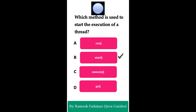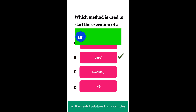The correct answer is the start() method. The start() method is used to start the execution of a thread. When you call start(), the thread state moves from new state to runnable state, and the JVM invokes the thread's run() method. This allows the thread to execute its task in parallel with other threads. Remember: to start thread execution, call the start() method — the JVM will internally call the run() method.